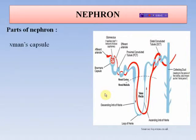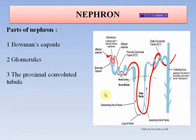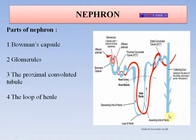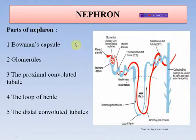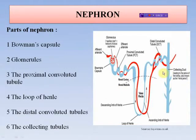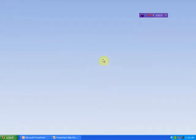The different parts of the nephron are as follows: Bowman's capsule, glomerulus, the proximal convoluted tubule or PCT, the loop of Henle, the distal convoluted tubule or DCT, and the collecting tubules leading to the renal pelvis.